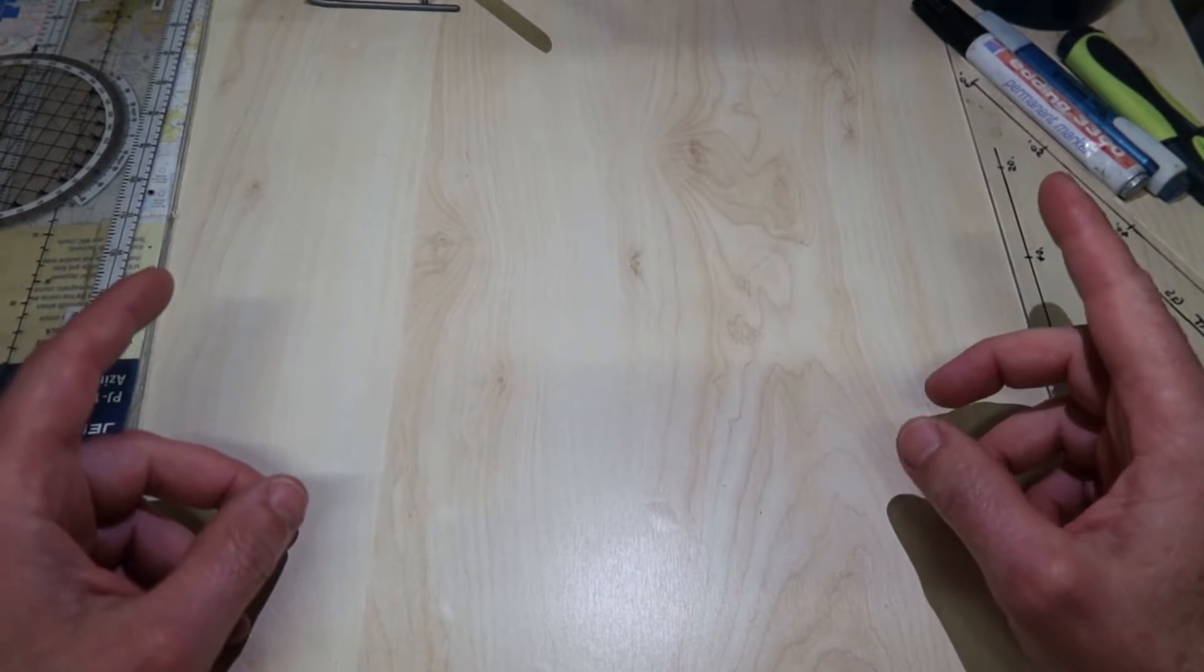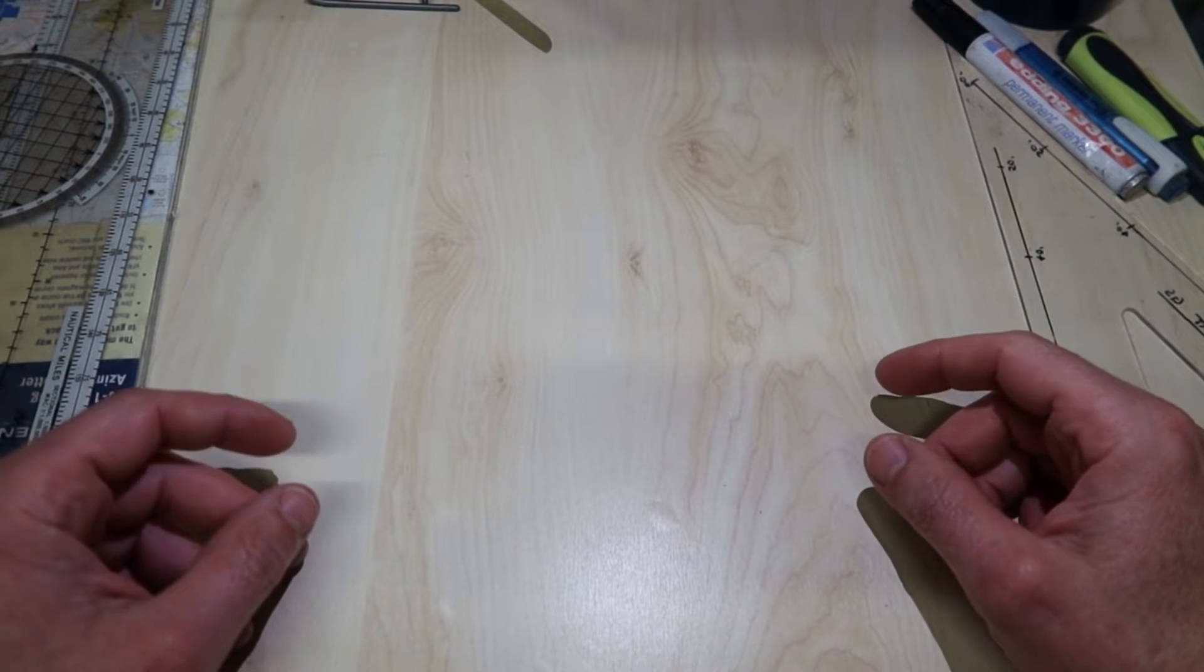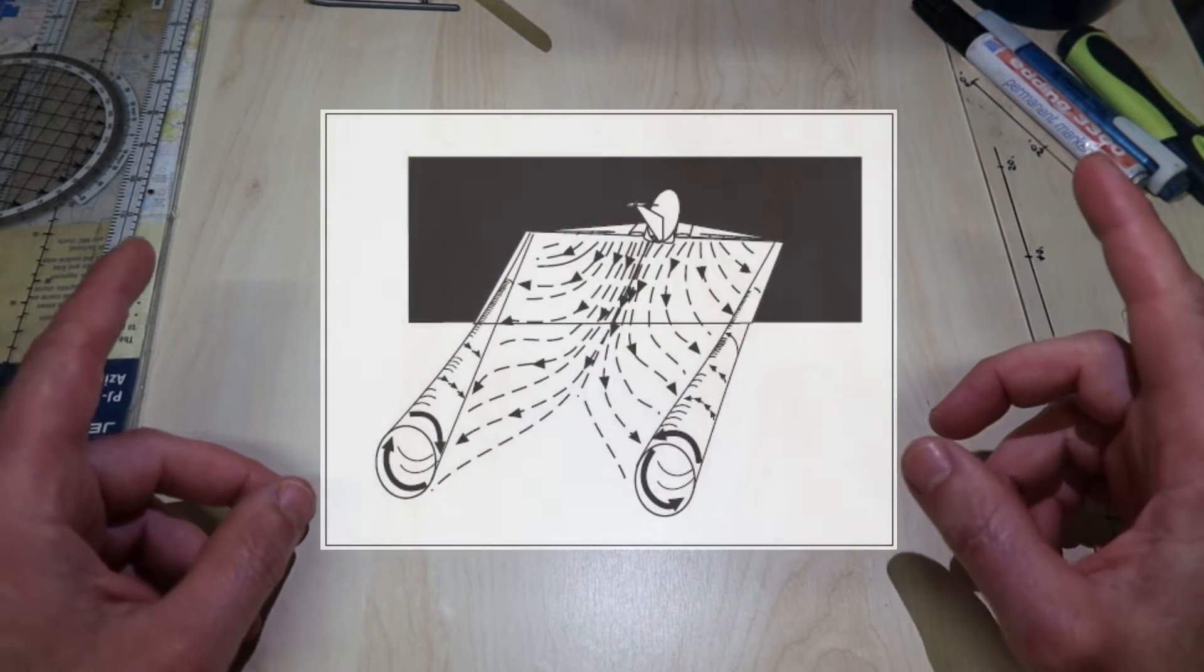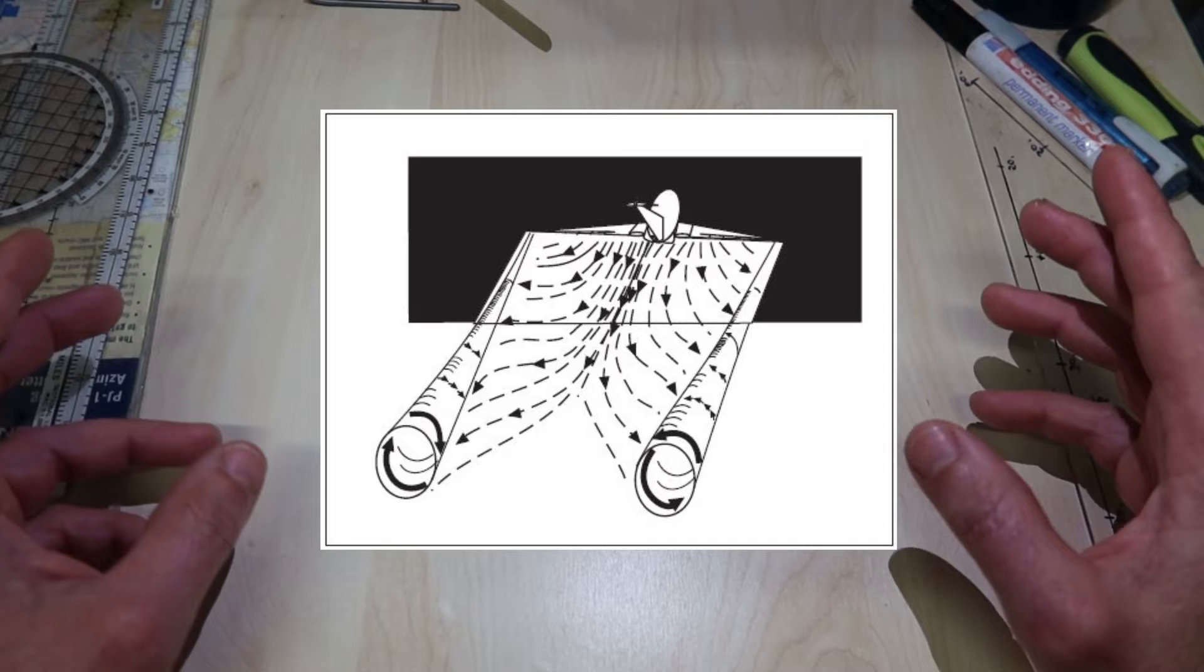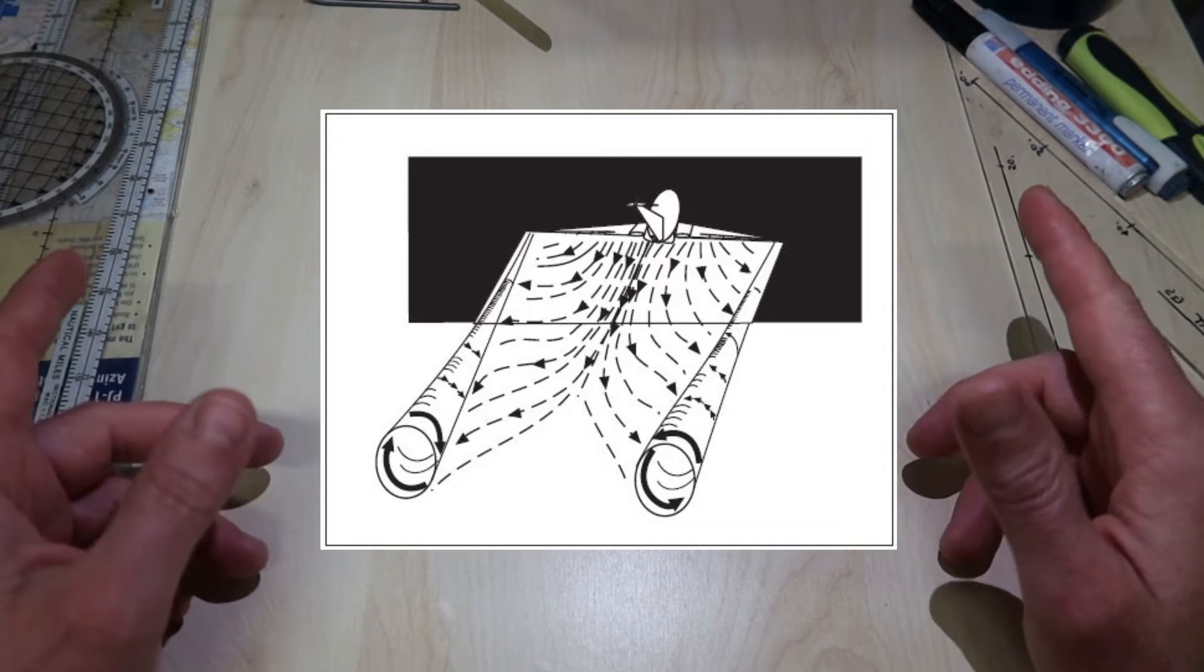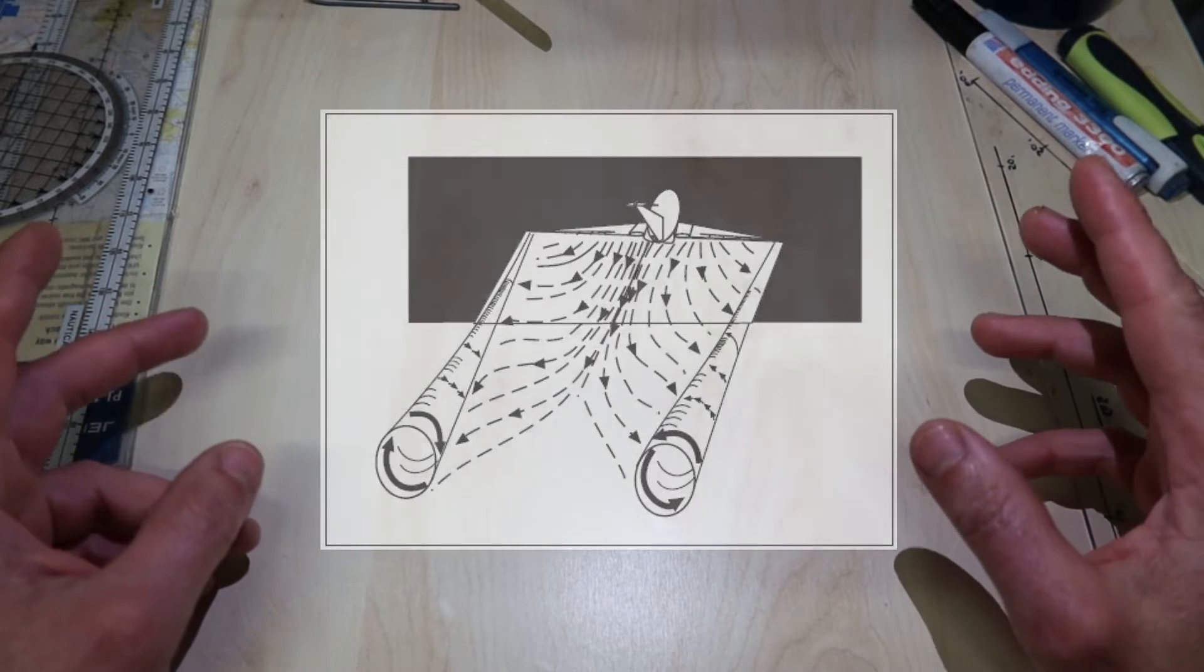Tip vortices can be very intense and energetic. If you encounter a strong one, the aircraft may roll rapidly at rates which easily exceed the capabilities of the cyclic control.